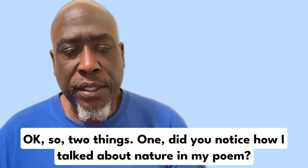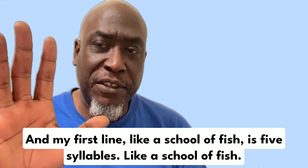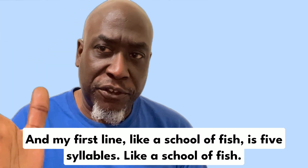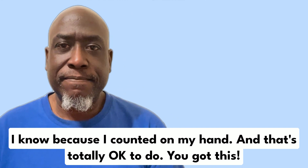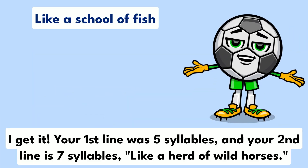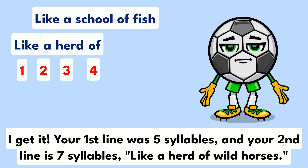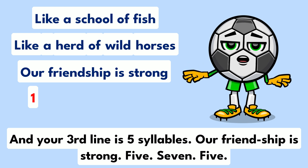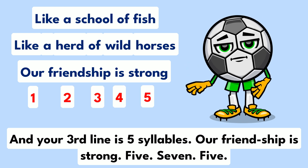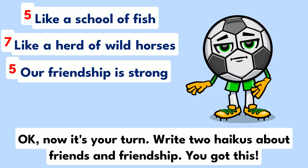Okay, so two things. One, did you notice how I talked about nature in my poem? My first line, "like a school of fish," is five syllables — I know because I counted on my hand, and that's totally okay to do. I get it — your first line was five syllables, your second line, "like a herd of wild horses," is seven syllables, and your third line, "our friendship is strong," is five syllables. Five, seven, five. Now it's your turn — write two haikus about friends and friendship!